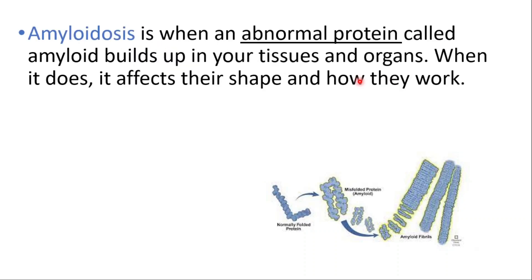Hey everyone, this is Daily Dose of Medicine. Amyloidosis is when an abnormal protein called amyloid builds up in your tissues and organs. When it does, it affects their shape and how they work.